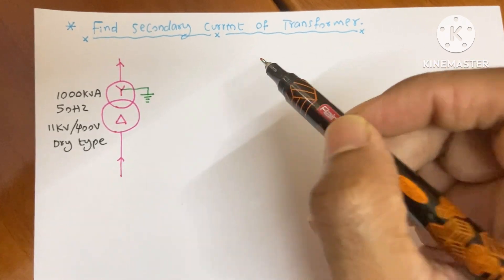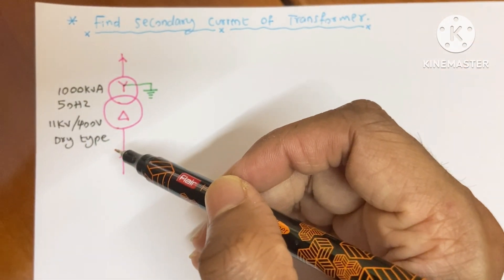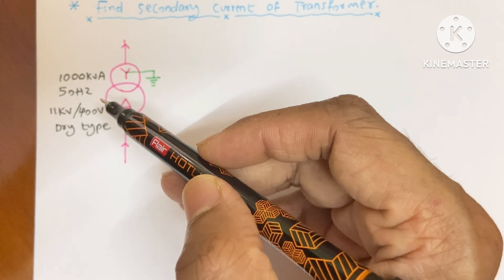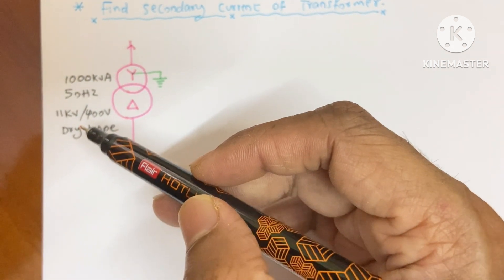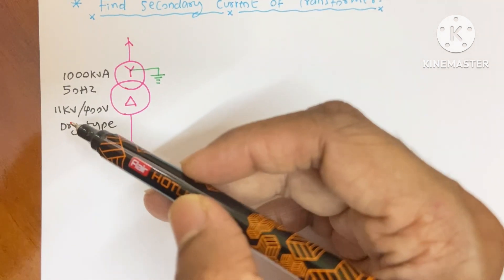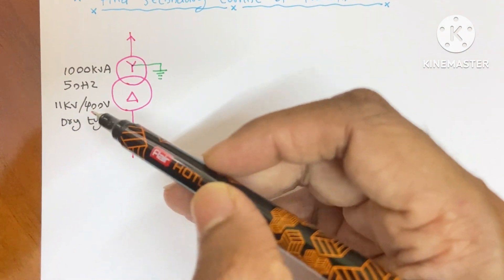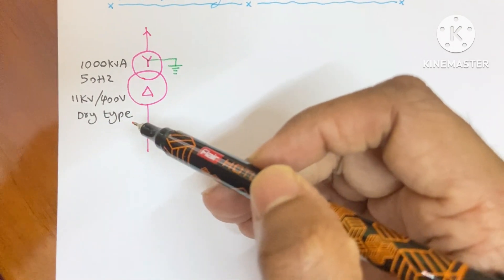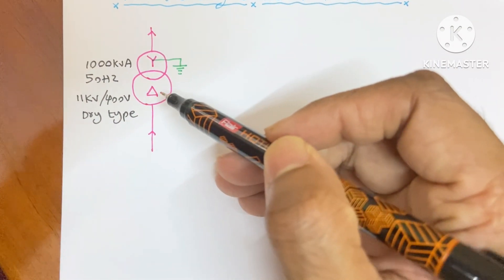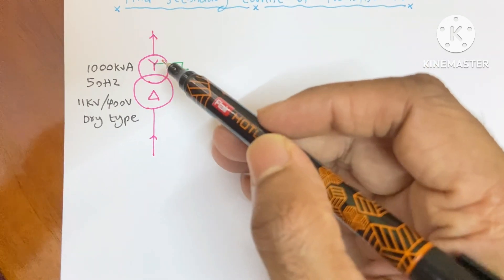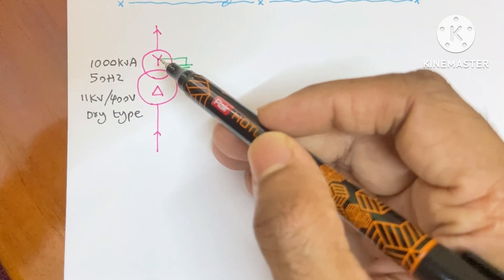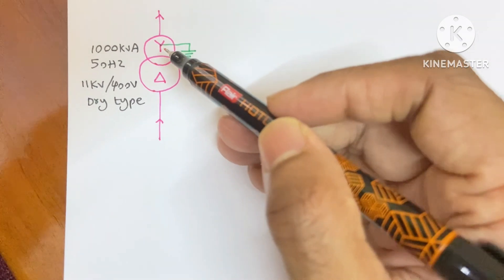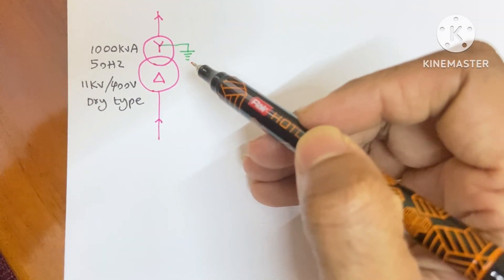Here we have a distribution transformer of 1000 kVA, 50 hertz, with a voltage of 11 kV on the primary side and 400 V on the secondary side. It is a dry type transformer. Its primary side is delta connected and the secondary side is star connected, meaning its neutral is already grounded.